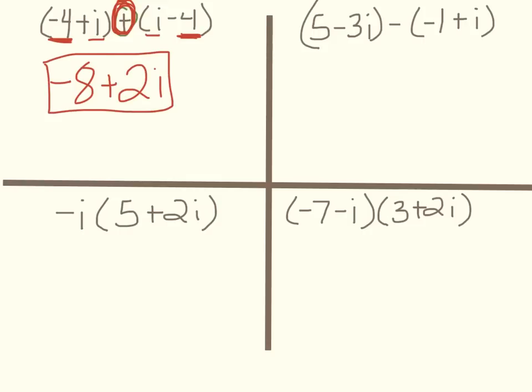Alright, this next one, same setup. We've got subtraction. We've always got people who forget to distribute their minus sign. We're looking at 5 minus 3i minus negative is plus 1 and then minus i. So we combine our reals first, 5 plus 1 is 6, and then we combine our imaginaries. Negative 3i minus i is negative 4i.